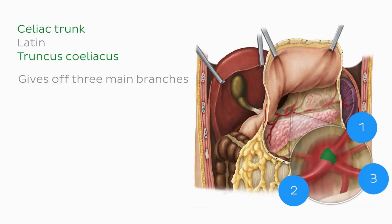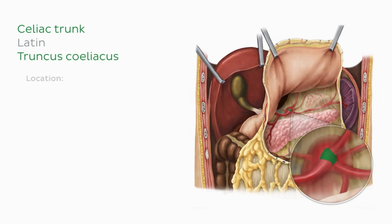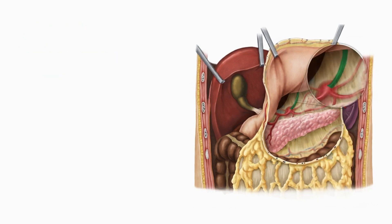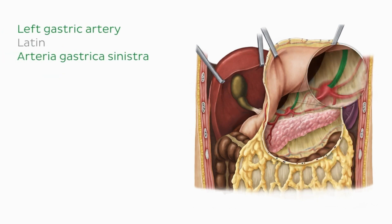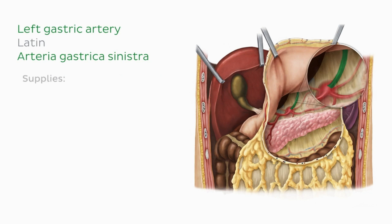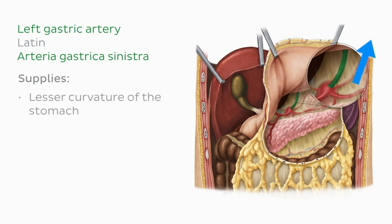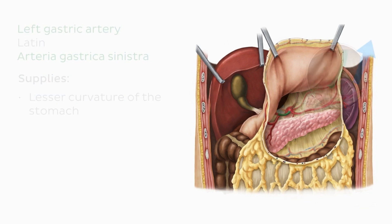The celiac trunk is located in the retroperitoneal space. The left gastric artery is one of its branches and it supplies the lesser curvature of the stomach — you can see the artery moving upwards to be distributed to that region.